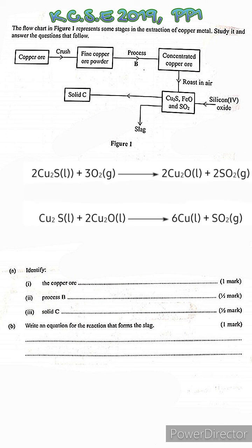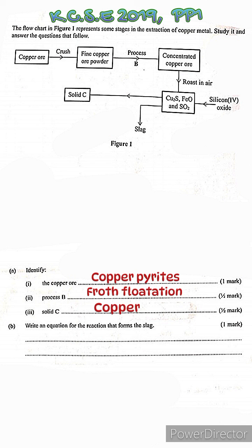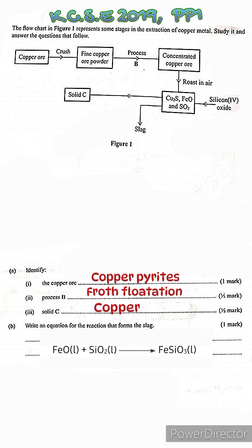Looking at the flowchart, solid C formed from the furnace is copper metal. So the answers are: Part A — the copper ore is copper pyrites; Process B — froth flotation; Solid C — copper metal. Part B asks for the equation for the reaction forming the slag. I hope this has managed not only to increase your knowledge in extraction of copper, but also boost your confidence. See you in our next video.